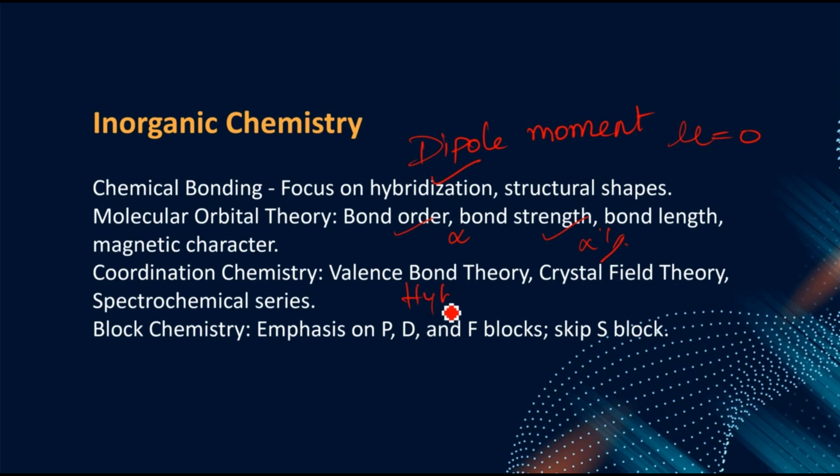The second thing is coordination chemistry where you are going to focus on Valence Bond Theory - questions about hybridization of complexes and Crystal Field Theory. There you can focus on spectrochemical series. Learn it thoroughly - which is weak field ligand, which is strong field ligand, which are neutral ligands, and the questions can be asked from CFSE.